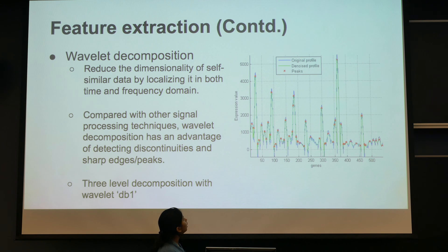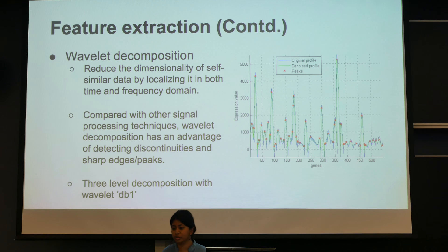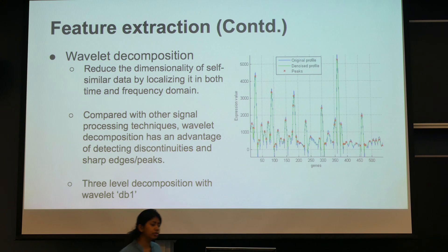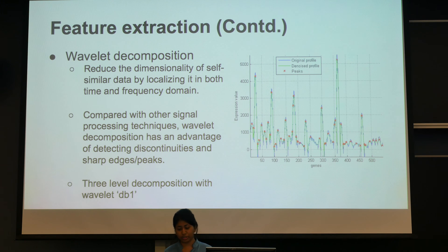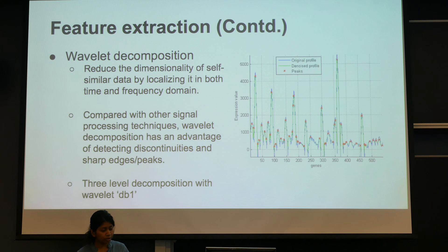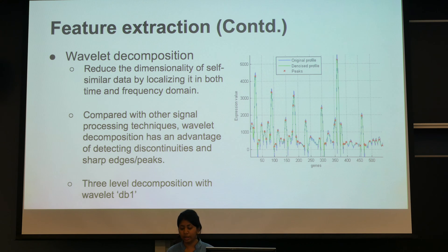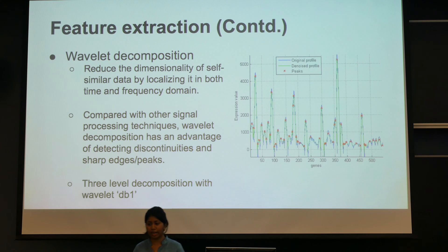The next part is the main contribution of our project: we further reduce the feature space using wavelet decomposition. We chose wavelet decomposition because, unlike Fourier transform or other transformations, it has the unique ability to localize data in both the frequency and space domain. Compared to other techniques, it has a better advantage for detecting peaks, discontinuities, or interesting features in the data.